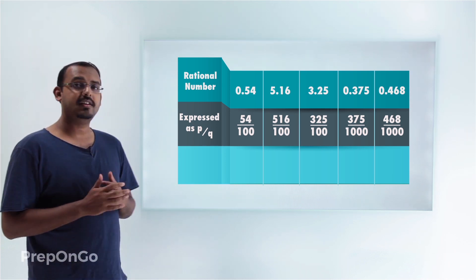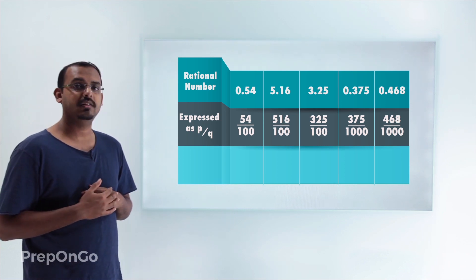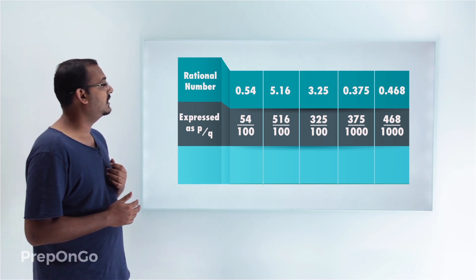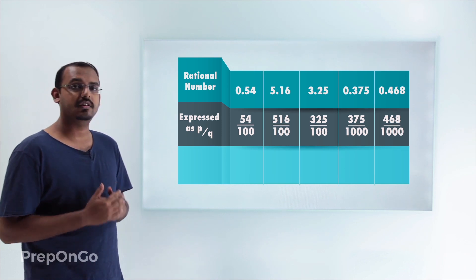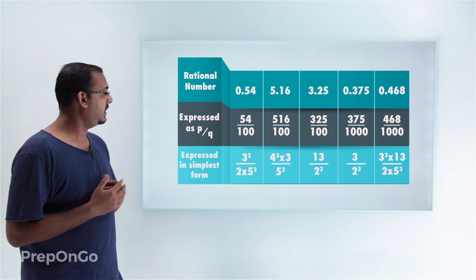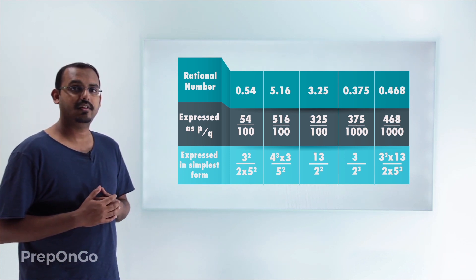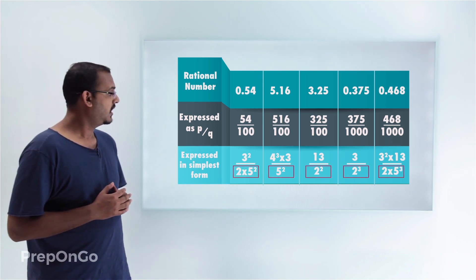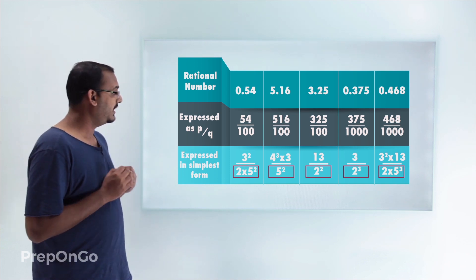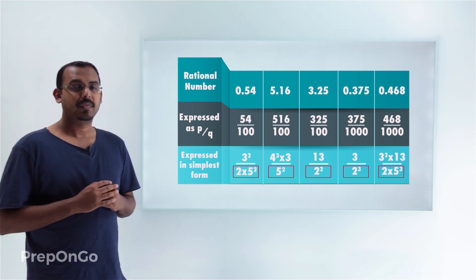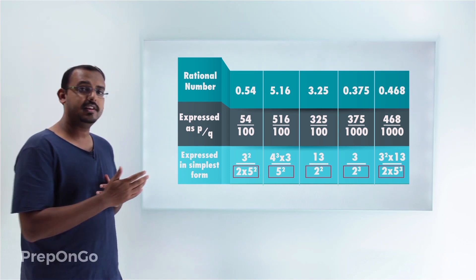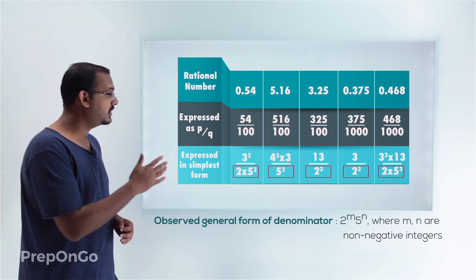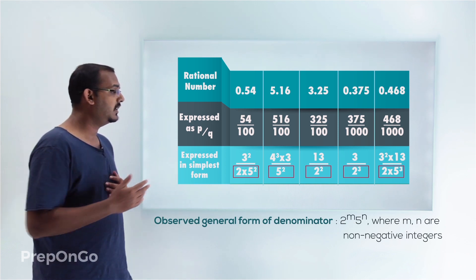Now let's do the prime factorizations of the numerators and denominators and bring them to the simplest form — cancelling out common factors. When we do that, observe the denominators of all these numbers. In the denominators you'll see they are of a very common type: I can represent the denominators of all these numbers in the form of 2 to the power m into 5 to the power n. There are no other prime factors in the denominators.